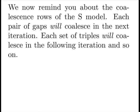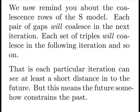We now remind you about the coalescent rows of the S model. Each pair of gaps will coalesce in the next iteration. Each set of triples will coalesce in the following iteration, and so on. That is, each particular iteration can see at least a short distance in the future, but this means the future somehow constrains the past.